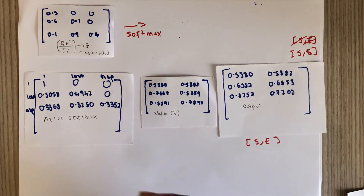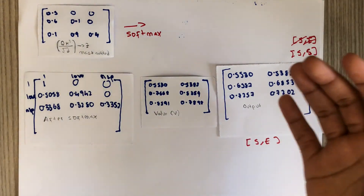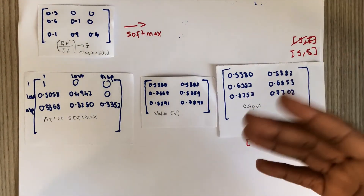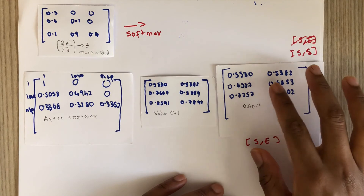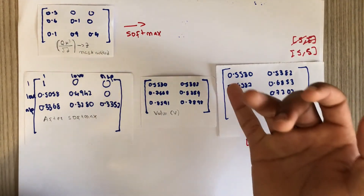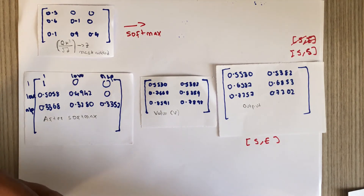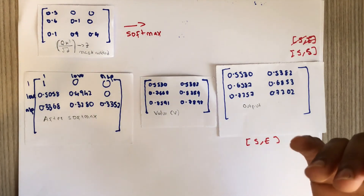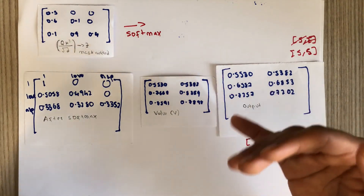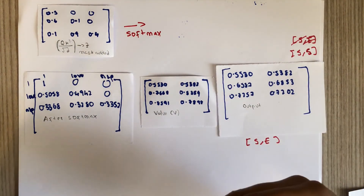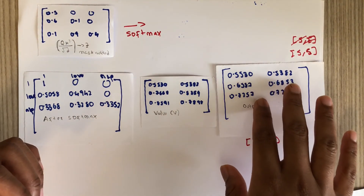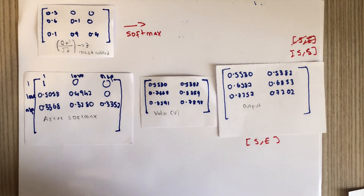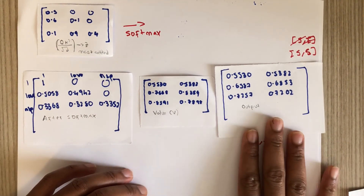The output for 'I love NLP' now has much more context to it, because we've weighted the representations by how much attention each word should pay to others. This output is called a context vector — each word now knows how much it is related to the other words. That's it for this video!